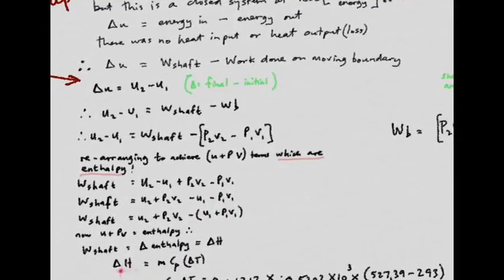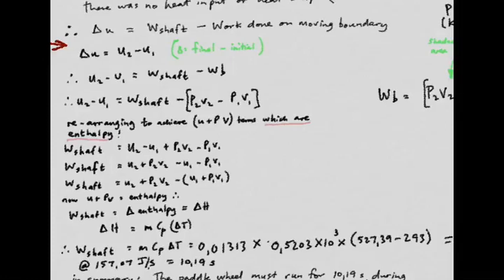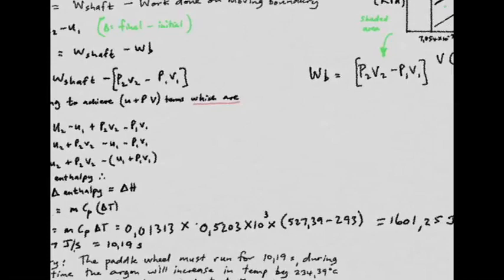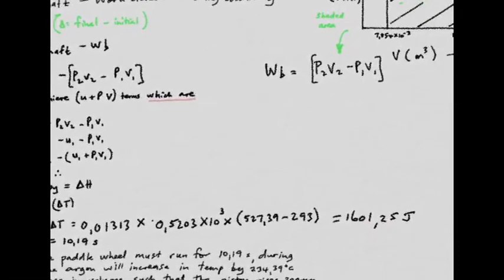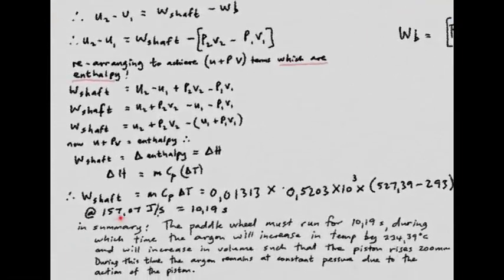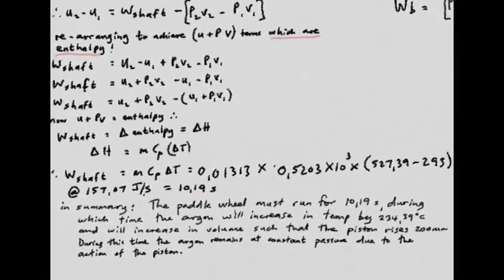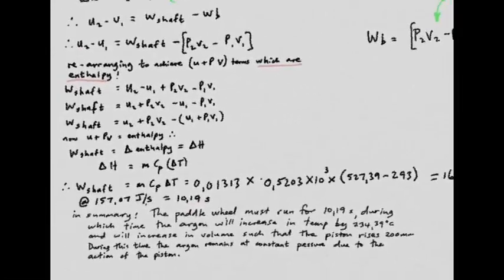Change in enthalpy is m cp ΔT. The rest is easy because cp was given. Substituting the mass, cp = 0.5203 kJ/kg·K, and ΔT, we miraculously arrive at the same value: 1601.25 joules. At 157 J/s, it takes 10.19 seconds to achieve the goal.